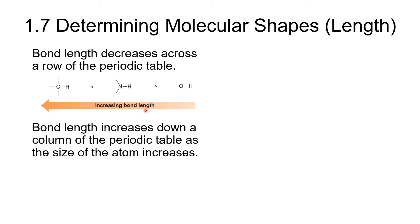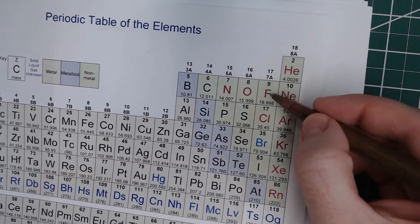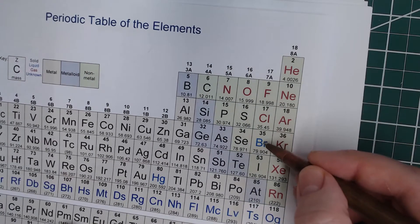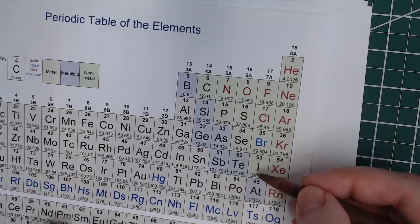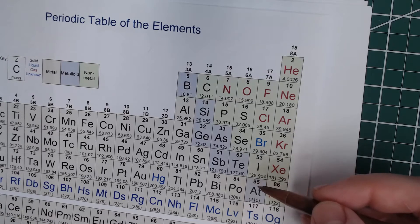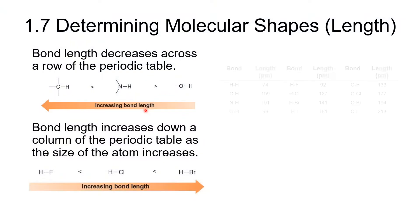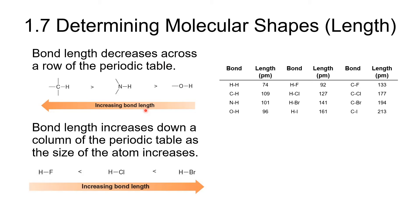Bond length also increases as we go down a column. For example, looking at the halogen acids — HF, HCl, HBr — those bond lengths increase as we go down the periodic table. HF is the shortest bond, HCl is longer, HBr is longer, and HI is even longer. This applies not just to bonds with hydrogen, but also to bonds with carbon and other atoms, as long as you can make an apples-to-apples comparison.